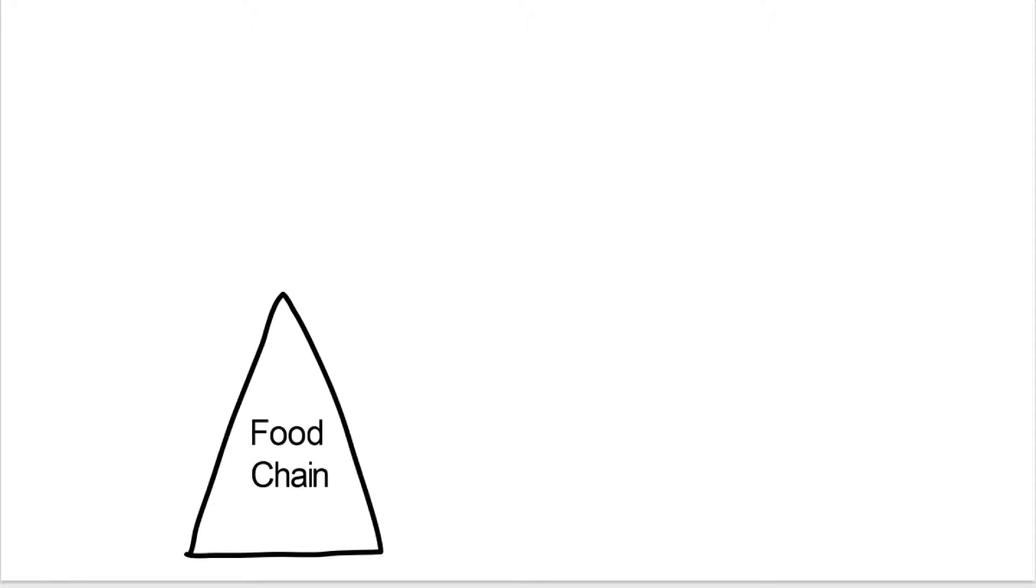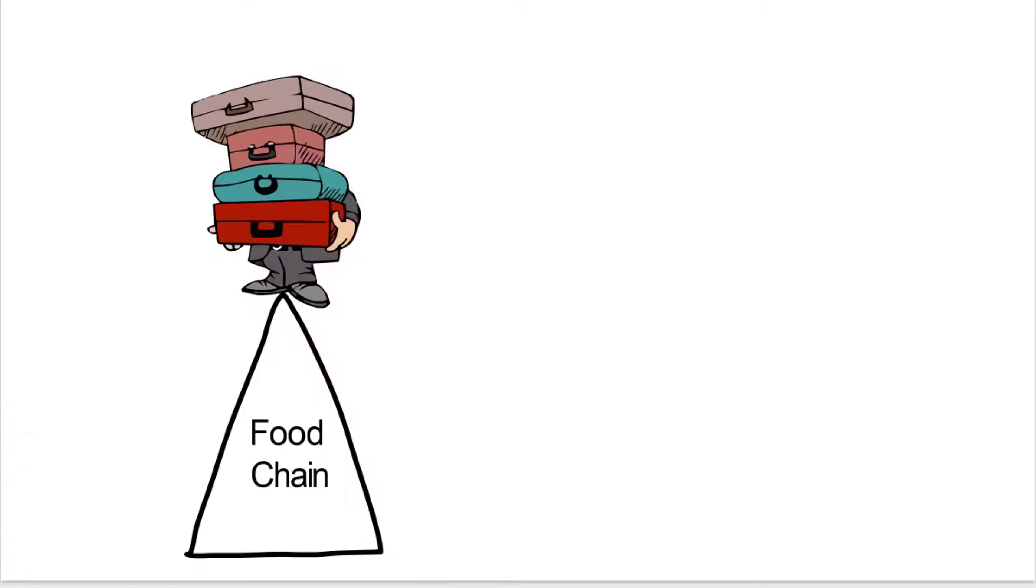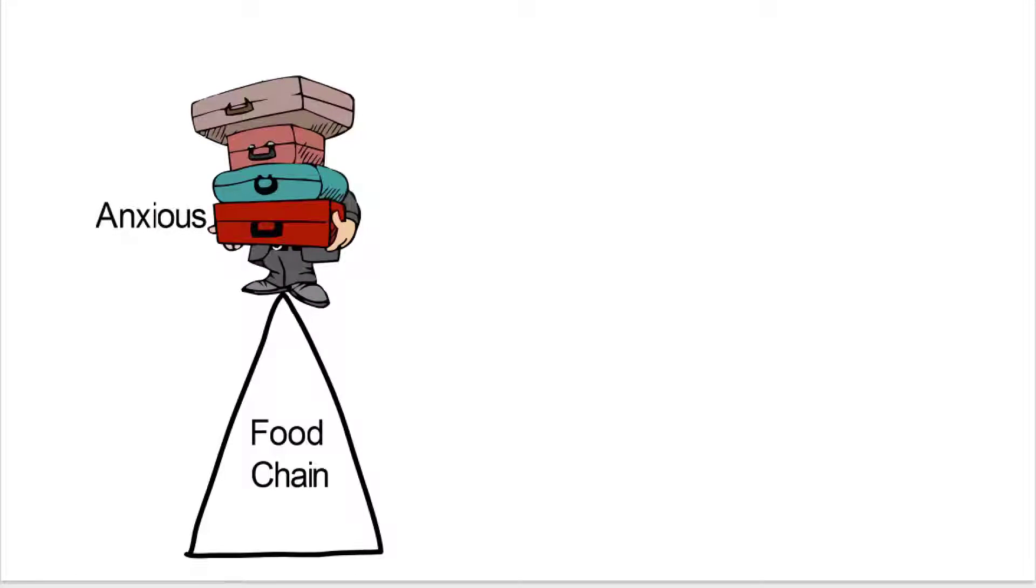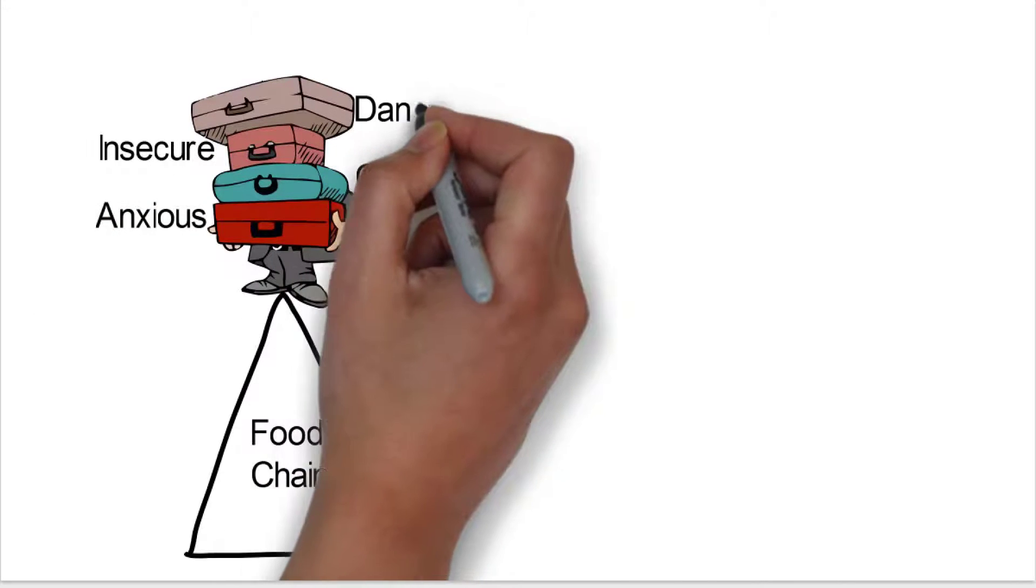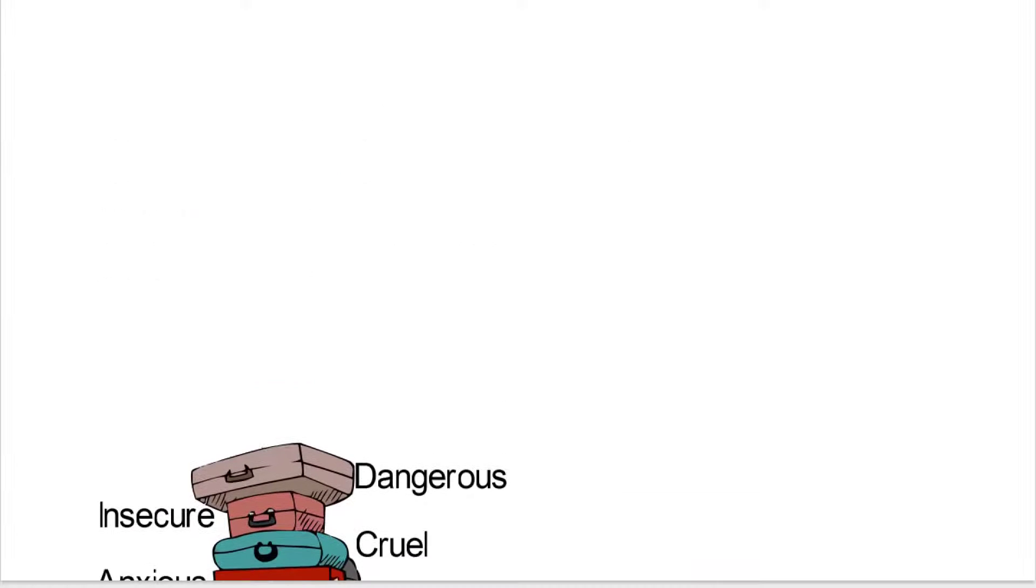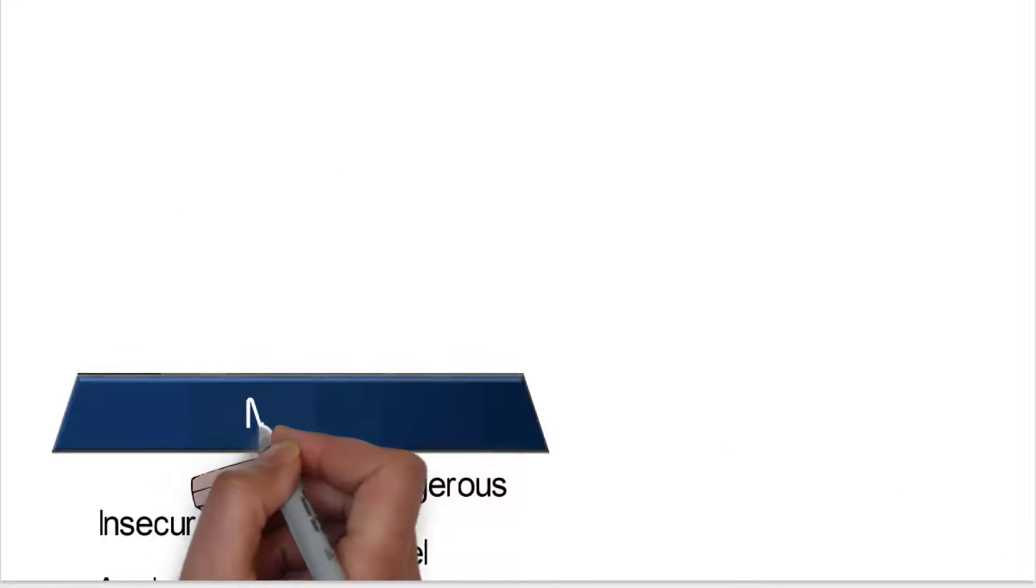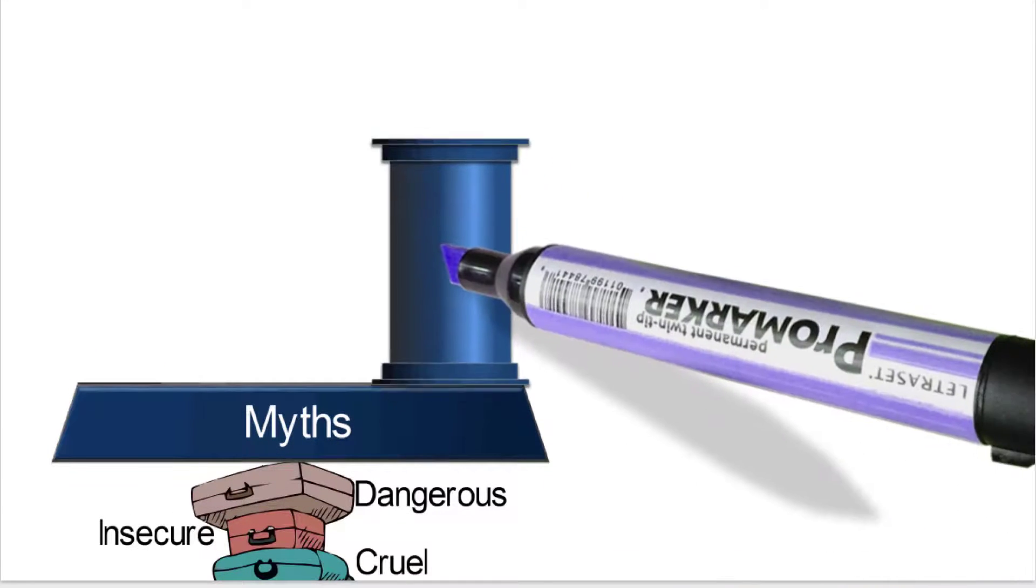This is kind of another one of the uh-ohs, because when you think about it, here we are, this species that is very anxious. Because of our anxieties, it kind of makes us cruel. And we are insecure. And because of our insecurity, it kind of makes us dangerous. And here we are at the top of the food chain.